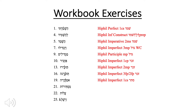Number nineteen is also a Hiphil imperfect 1cs with the aleph preformative. Again the accent is on the middle. We have the hirik yod that indicates it's a Hiphil as well. The qamats-ta at the end is an accusative ending — this would be the object: 'I hid it.' So that is not part of the verb stem per se; it is actually an object marker.